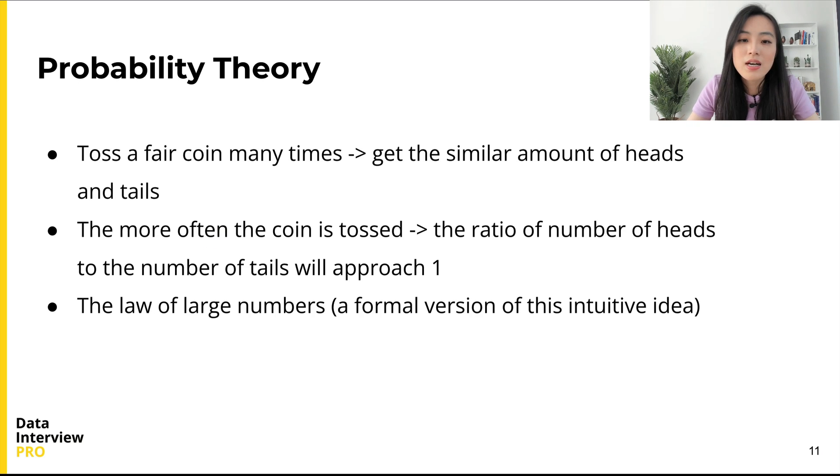For instance, common intuition tells us that if we toss a fair coin many times, then roughly half of the time it will turn up heads, and the other half it will turn up tails. The more often the coin is flipped, the more likely that the ratio of the number of heads to the number of tails will approach 1. Probability theory provides a formal version of this intuitive idea, known as the law of large numbers.